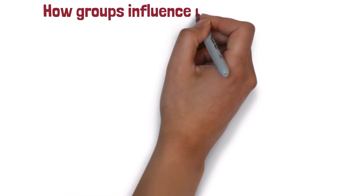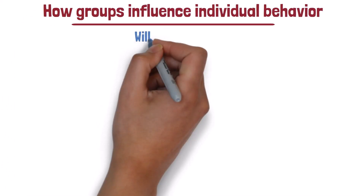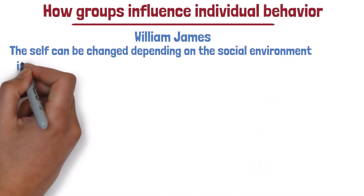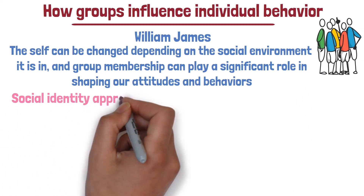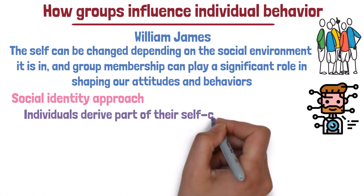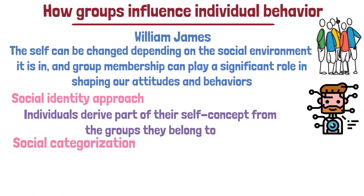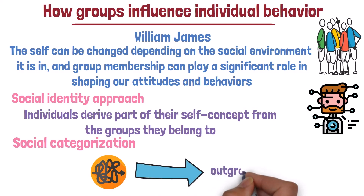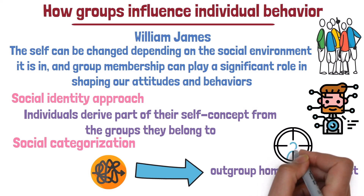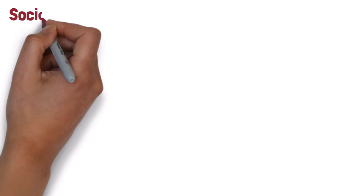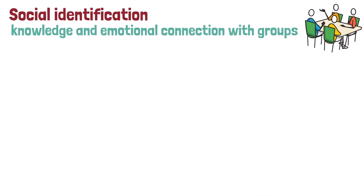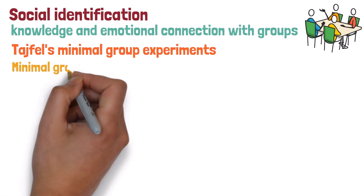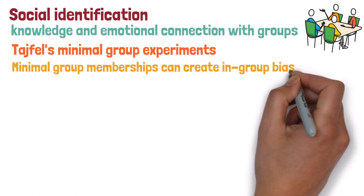Let's shift to the broader concept of how groups influence individual behavior. Willie and James propose that the self can be changed depending on the social environment, and group membership plays a significant role in shaping attitudes and behaviors. The social identity approach suggests that individuals derive part of their self-concept from the groups they belong to. Social categorization helps individuals make sense of a chaotic world, and can lead to the outgroup homogeneity effect, where individuals perceive the outgroup as more homogeneous than it actually is.